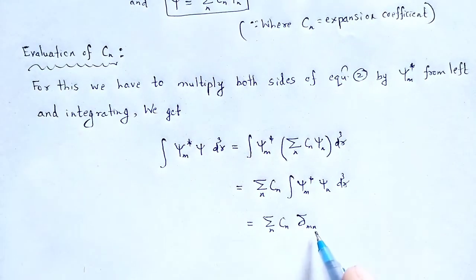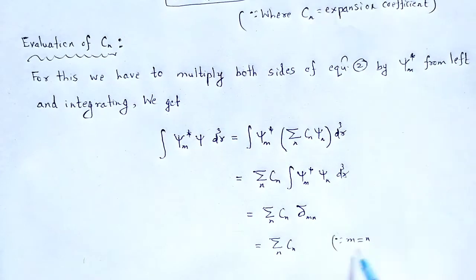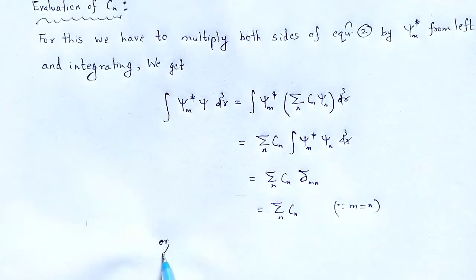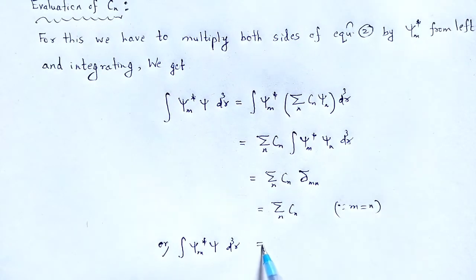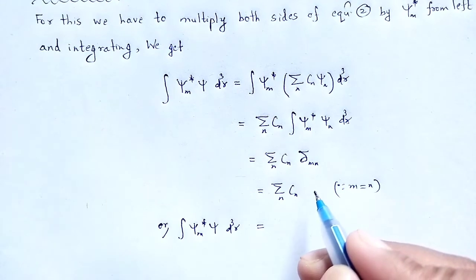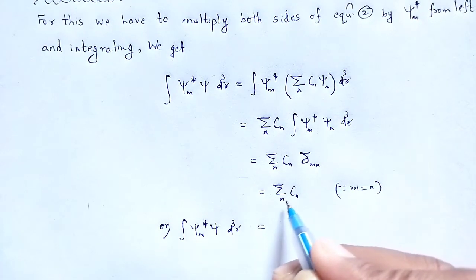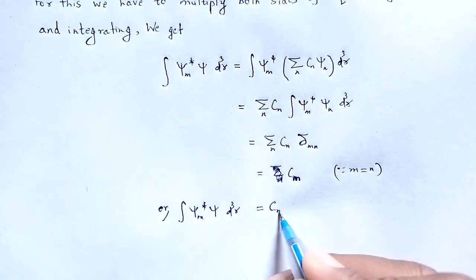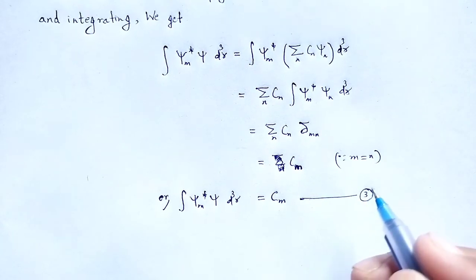When m is equal to n, the value of delta_mn, that is the Kronecker delta function, will be 1. Therefore, the integral of psi_m-star times psi dqr equals C_m — equation 3. For convenience, we can replace C_m by C_n; that is, C_n equals the integral of psi_n-star times psi dqr.